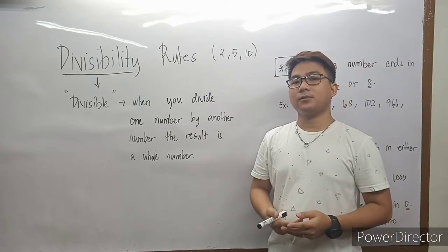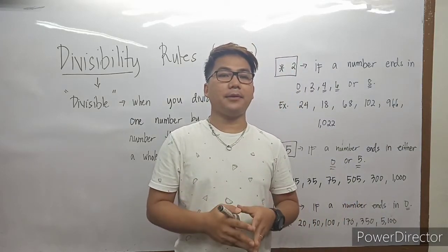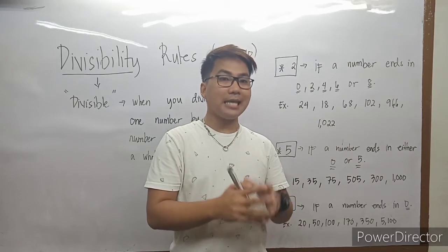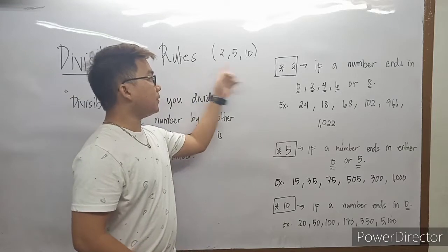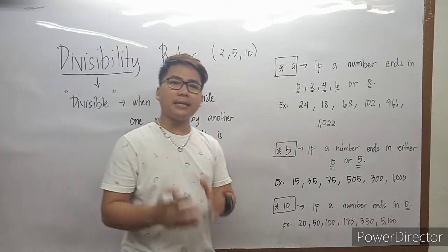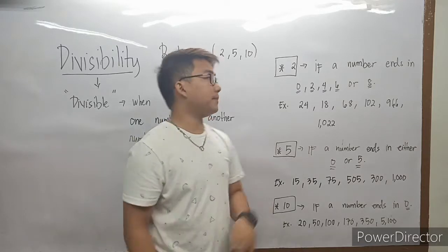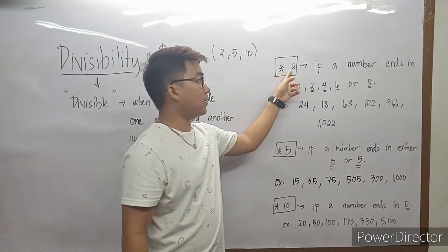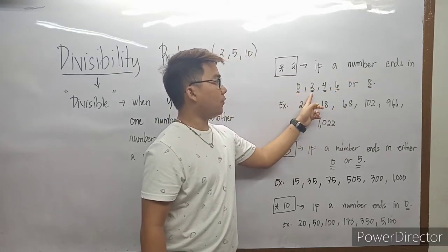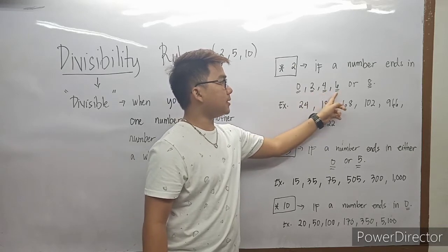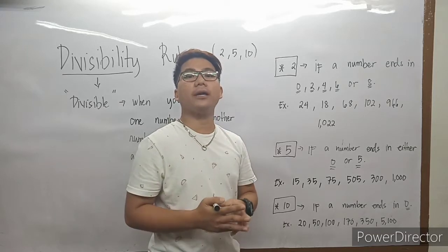So, magbigay na tayo ng examples kung paano nga ba natin malalaman kung yung number na yun ay divisible by 2, by 5, or by 10. Sisimulan natin kay 2. Ang sabi dito sa 2: if a number ends in 0, 2, 4, 6, or 8, ibig sabihin yung number na yun ay divisible by 2.